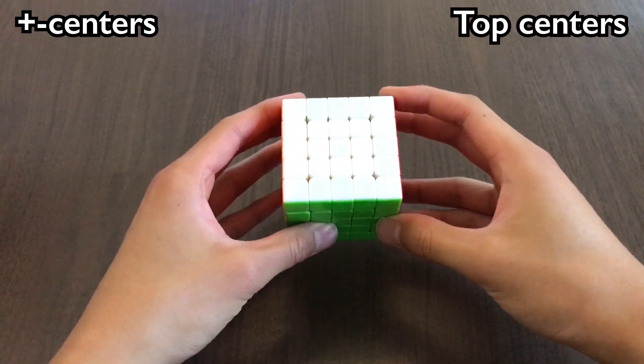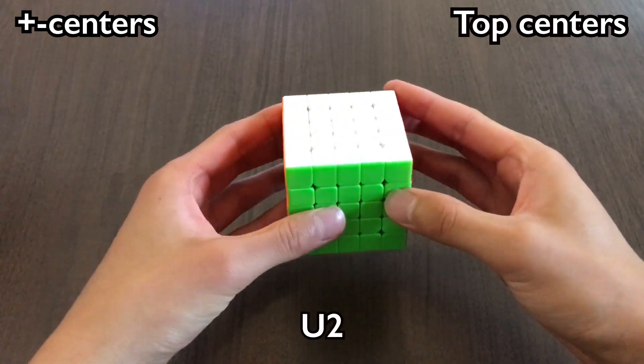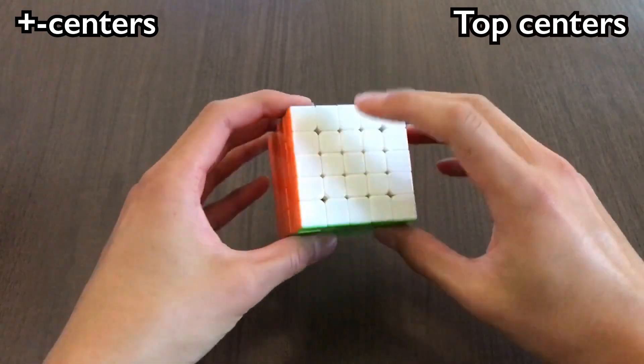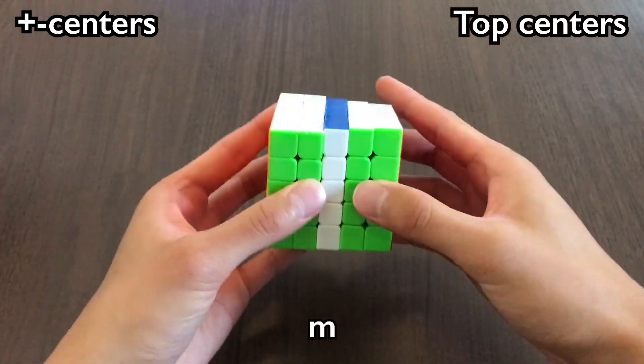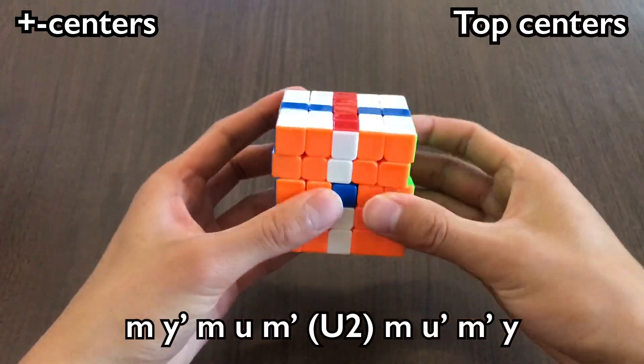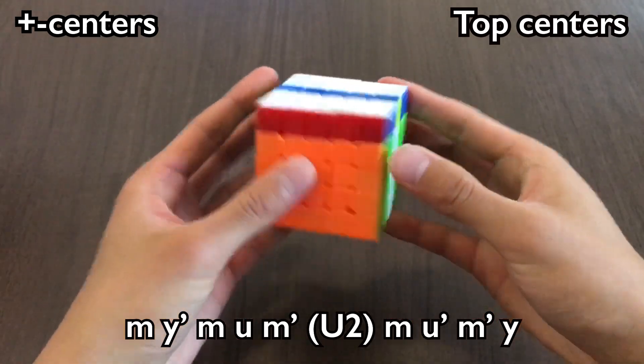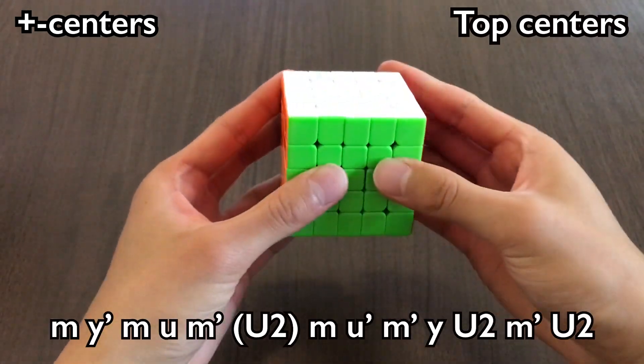Now for the top centers. If we want to swap with B, that's just a U2. If we want to swap with A, we will do an M, and then swap for I, and then a U2, M' U2.